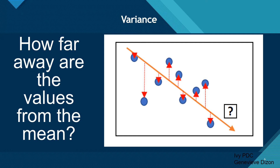As mentioned earlier, variance and mean are interrelated. Here we have the purple circles representing your data, and the orange line represents the mean. In variance, we are trying to see the distance of the different values from the mean itself — how far away are the values from the mean?